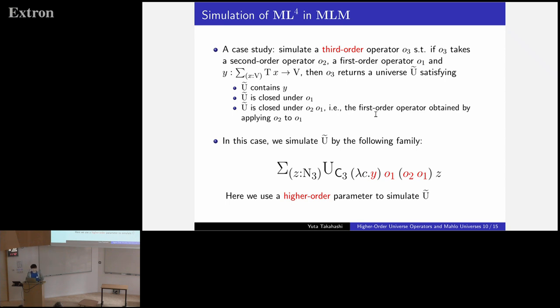Here is our idea for simulating ML4 in MLM. But let me give a case study. Simulate a third order operator O3 such that if O3 takes a second order operator O2, a first order operator O1, and Y, which is a family of sets in V, then O3 returns a universe tilde satisfying, especially U tilde is closed under O2O1, namely the first order operator obtained by applying O2 to O1. In this case, we simulate U tilde by the following family. Here, we obtain this subuniverse by reflecting this operator. And here we use a higher order parameter to simulate U tilde, namely a parameter O2 is a higher order parameter.